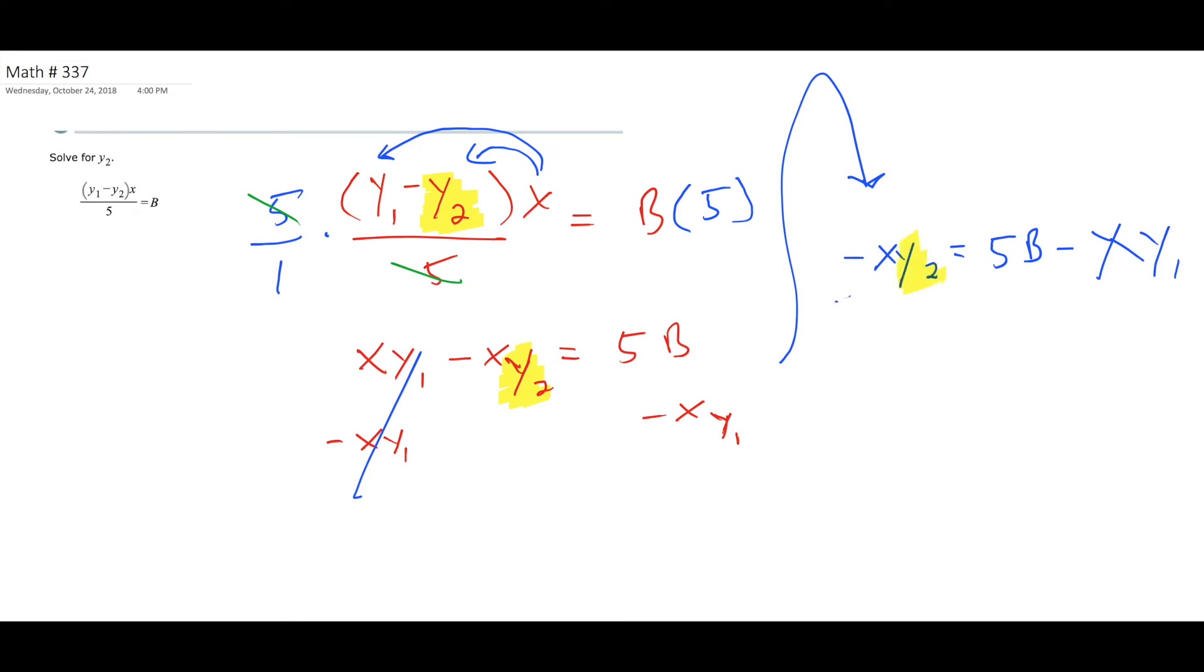Good. So divide by negative x. Divide by negative x. All right, then you're going to get y2. But you're not supposed to have a negative in the denominator.